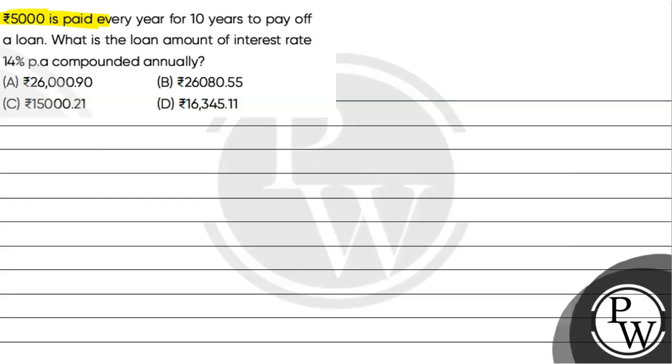Question says rupees 5,000 is paid every year for 10 years to pay off a loan. What is the loan amount if interest rate is 14% per annum compounded annually? Four options are given.